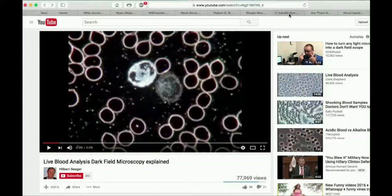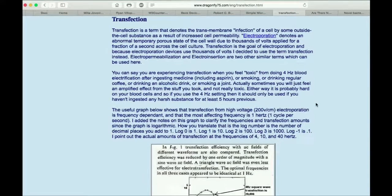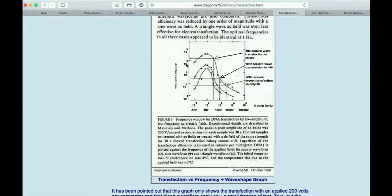Speaking of transfection, let's look at my transfection page. This chart and this scientific study compares the amount of transfection to the frequency applied. This top one is a square wave. This is a triangle wave and this is a sine wave. So at 4 hertz, we get approximately 20,000 on their range of transfection. At 10 hertz, we get 400. What is 400 divided by 20,000? So you get 2% of transfection at 10 hertz that you do at 4 hertz and even much less at 40 hertz.